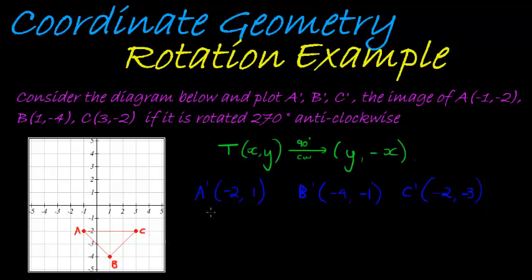Let's go plot that on here. So we've got (-2, 1), that is my A'. Then we have (-4, -1), that is my B'. And then we have (-2, -3), that is my C'.